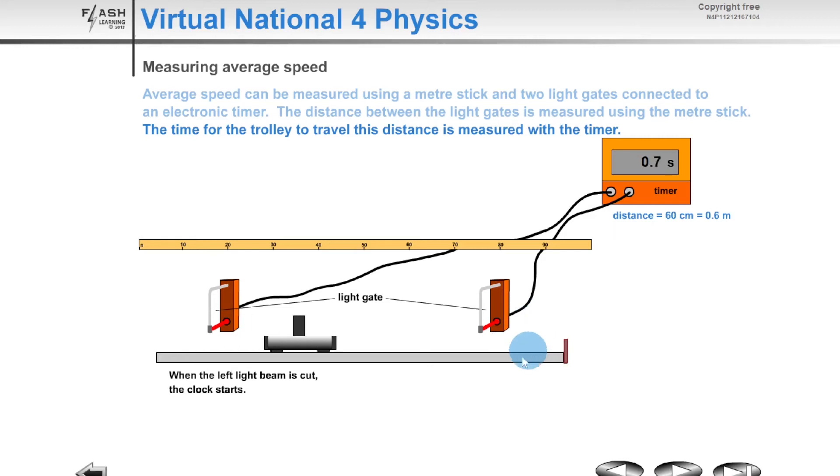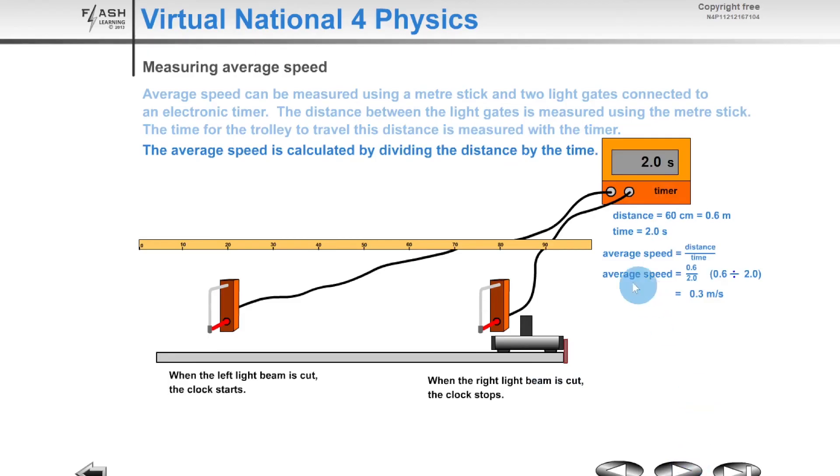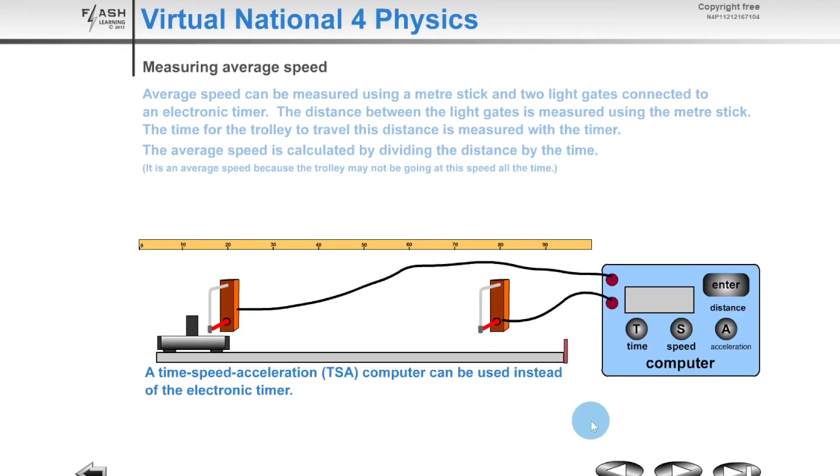We've got a time of two seconds provided by the timer. That gives me my distance and my time, and then I can sub it in to average speed equals distance over time, which gives me 0.6 over 2, which is 0.3 meters per second in this example.